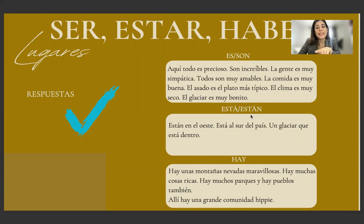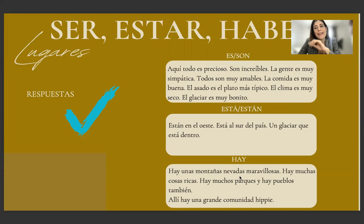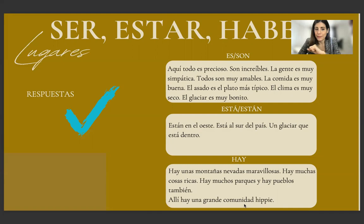Con está y están: están al oeste; está al sur del país; un glaciar que está dentro. Con hay: hay unas montañas nevadas maravillosas; hay muchas cosas ricas; hay muchos parques; hay pueblos también; allí hay una grande comunidad hippie. Now let's analyze the difference between es, está, and hay.